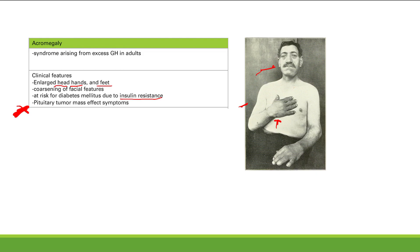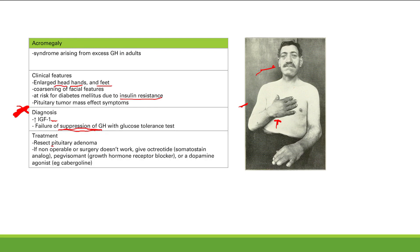To diagnose acromegaly, you can measure elevated IGF-1 levels, since growth hormone stimulates IGF-1 production in the liver. Another test is the glucose tolerance test — normally giving glucose suppresses GH, but in acromegaly that suppression doesn't occur, confirming excess growth hormone. Treatment is surgical removal of the tumor. If surgery fails, options include octreotide, a somatostatin analog that reduces hormone release; pegvisomant, a growth hormone receptor blocker; or dopamine agonists.